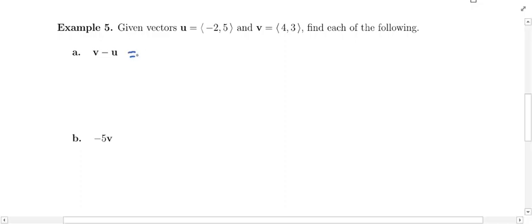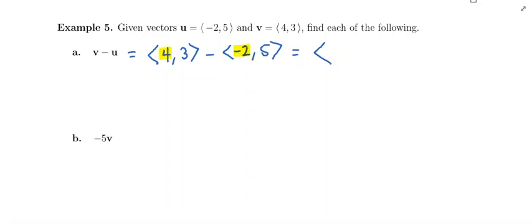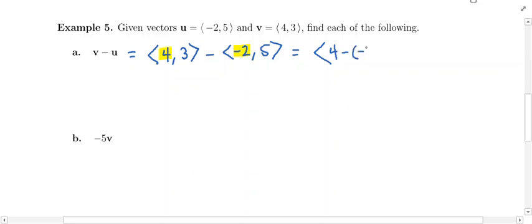Remember we're subtracting two vectors, so the order matters. v needs to go first, so I'm going to write down the v vector, and then I'm going to subtract the u vector. To subtract two vectors, the result will also be a vector. To get the individual components, you need to subtract corresponding components. To get the first component of the difference, I'm going to subtract the horizontal components. This is going to be 4 minus a negative 2.